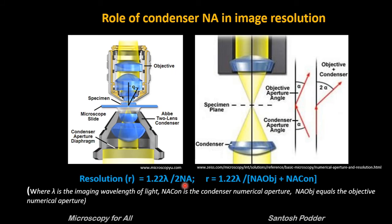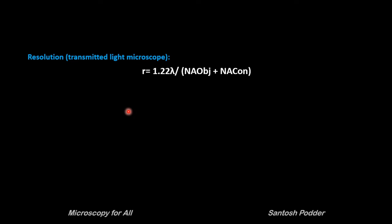Numerical aperture determines the resolving power of an objective, but the total resolution of the microscope system is also dependent upon the numerical aperture of the sub-stage condenser. Higher the numerical aperture of the total system, the better the resolution. The '2·NA' in the formula is actually the numerical aperture of the objective plus the numerical aperture of the condenser. The correct alignment of the microscope optical system and the adjustment of the condenser aperture are of paramount importance to ensure maximum resolution, as we learned during the setting up of color illumination in the last video.